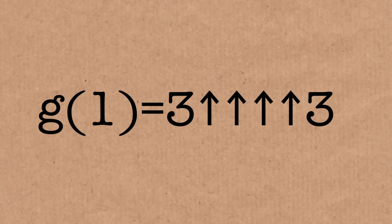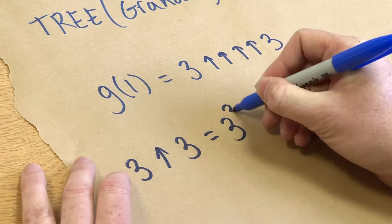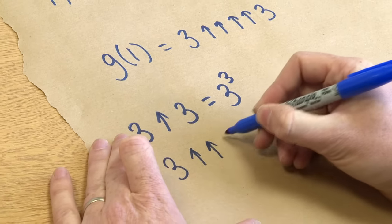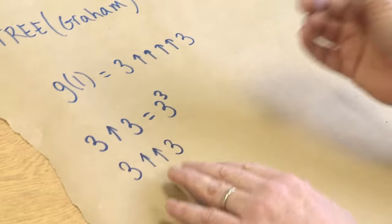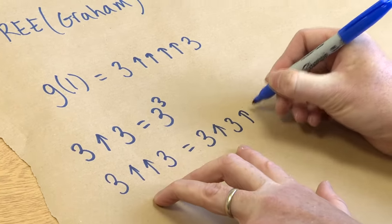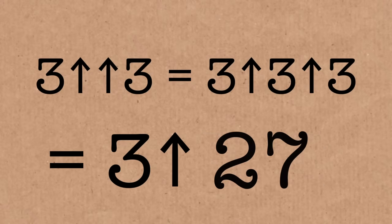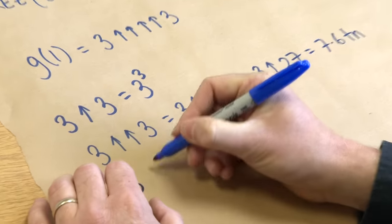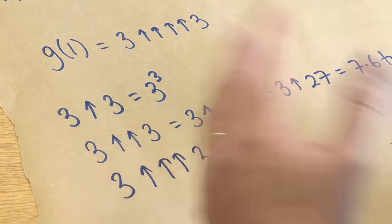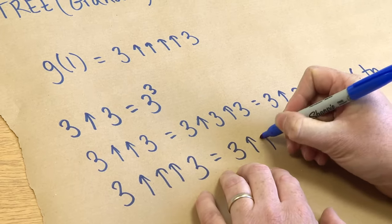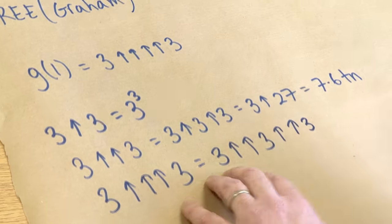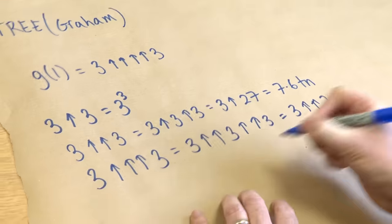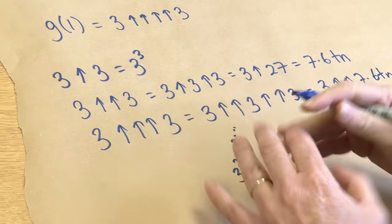Just to remind you what these arrows are: if I have 3 arrow 3, that just means 3 to the power of 3, which is 27. A double arrow means doing a repetition of the single arrow — in this case 3 times — so that's 3 arrow 3 arrow 3, which is 3 to the power of 27, about 7.6 trillion. Three arrows is just repeated double arrows, so that's 3 to the 3 to the 3, which is 3 double-arrows 7.6 trillion — a power tower of 3s that is 7.6 trillion high.